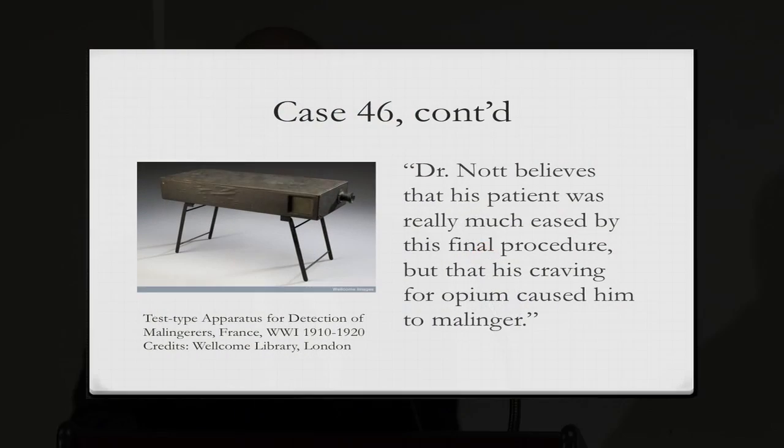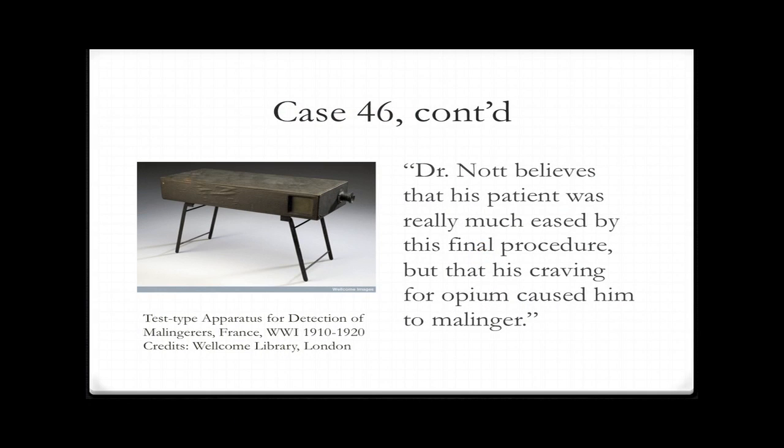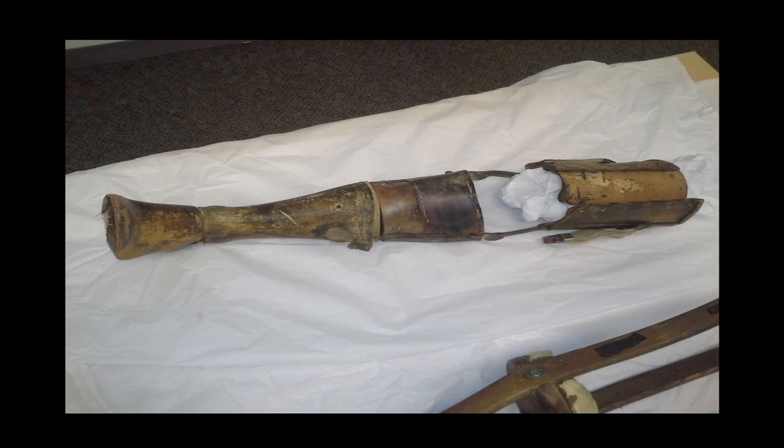There's some kind of test-type apparatus that was used for the detection of malingerers in World War I. Amputation and phantom limb pain is generally a big problem in modern military conflicts. Anxieties over malingering, truth-telling, and deception in the context of pain really started to take hold in the late 19th and early 20th century. Pain was the number one concern for military surgeons — you can always feign pain.